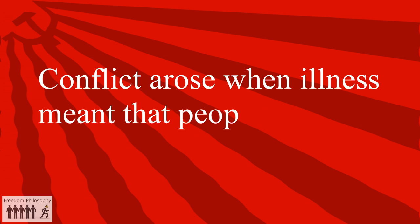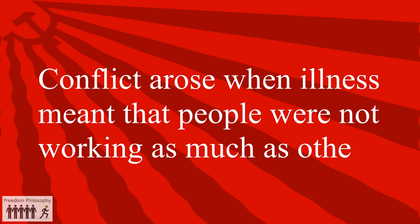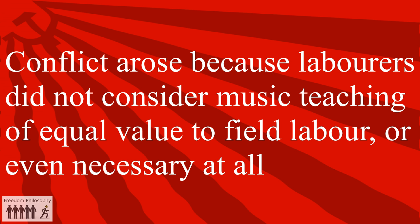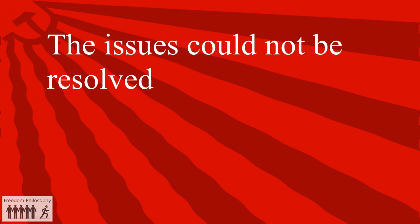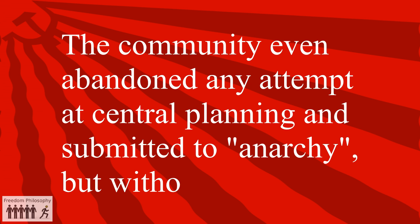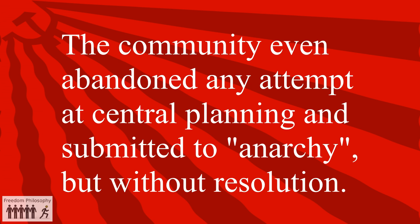Conflict arose when illness meant that people were not working as much as others. Conflict arose because labourers did not consider music teaching of equal value to field labour, or even necessary at all. The issues could not be resolved by committees, by democracy, or even by asking Owen to be the decision maker. The community even abandoned any attempt at central planning and submitted to anarchy, but without resolution.